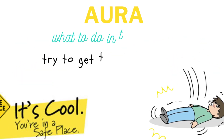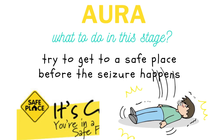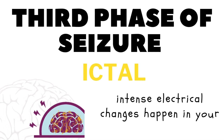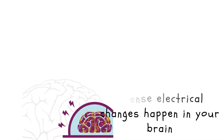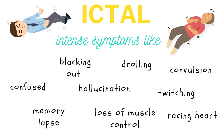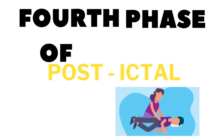If you have an aura, try to get to a safe place before the seizure happens. If an aura does not progress to other stages, it is called a partial seizure. The ictal stage is what most people think of as a seizure, during which intense electrical changes occur in the brain. Physical signs include loss of awareness, blacking out, confusion, memory lapse, trouble hearing, odd smells or taste, hallucinations, seeing flashing lights, trouble speaking, drooling, loss of muscle control, twitching, repeated movements like lip smacking or chewing, body convulsions, trouble breathing, and a racing heart.